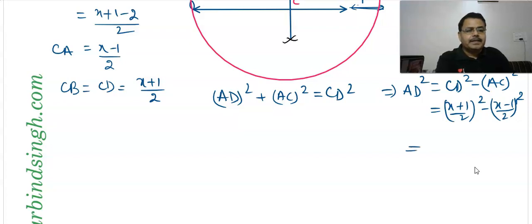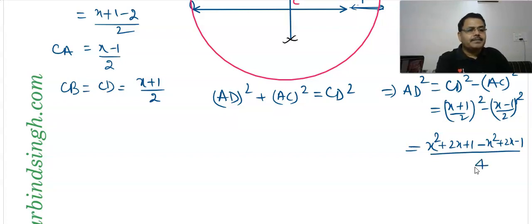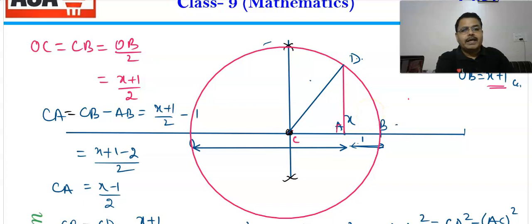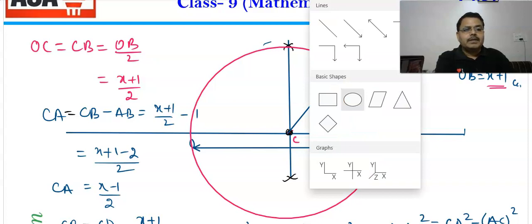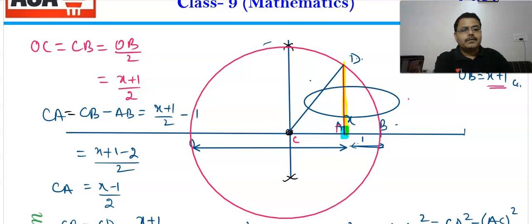CD is (x+1)/2 whole square, and AC is (x−1)/2 whole square. Calculating: AD² = [(x²+2x+1) − (x²−2x+1)] / 4 = 4x/4 = x. So AD² = x, which means AD = √x. The length AD is √x. Now, taking A as center and AD as radius, we draw an arc.